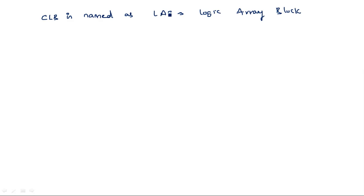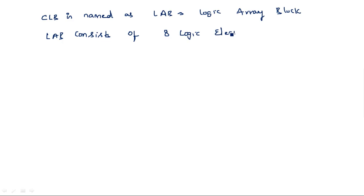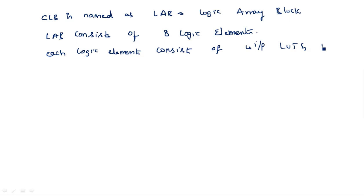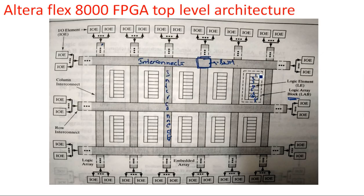This is the name for the CLB in this family. LAB consists of eight logic elements. Each logic element consists of a four-input LUT, a D flip-flop, and a multiplexer — a 2-to-1 or 4-to-1 multiplexer depending on their use. Similarly, we are having n number of CLBs in this FPGA board.